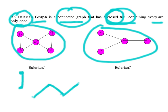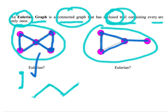So we're going to look at these graphs and decide whether they're Eulerian. On this graph I can go arc to arc to arc, using each arc only once, and I've started and ended in the same place — so that's a closed trail and the graph is Eulerian. On the second graph, I can go arc after arc but then I run into a problem: to get back to where I started I have to go back over an arc I've already used, so that graph is not Eulerian.